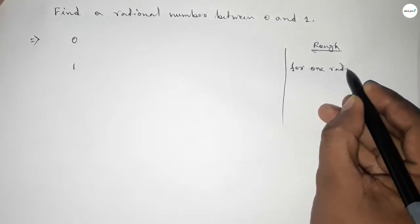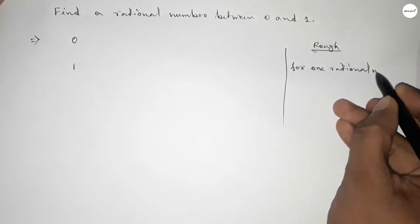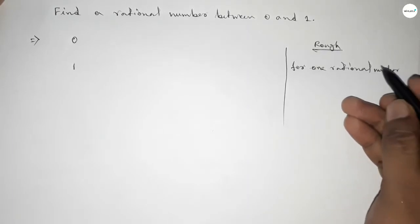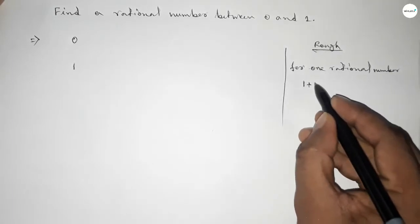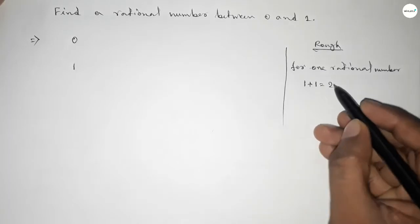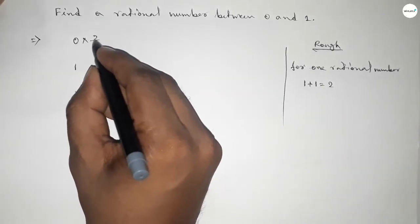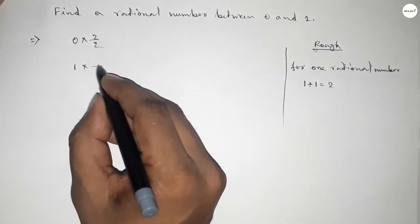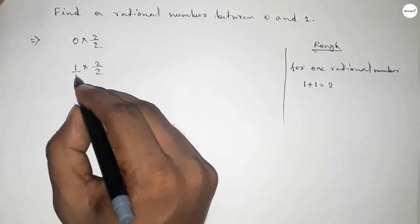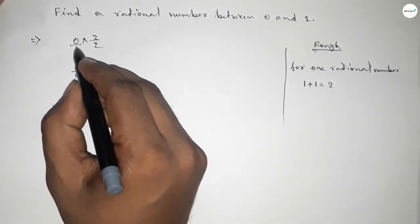We should multiply both numbers by 1 plus 1 equal to 2, by this way. So we should multiply by 2 here up and down, and here up and down. We can express 1 as 1 over 1 and 0 as 0 over 1.